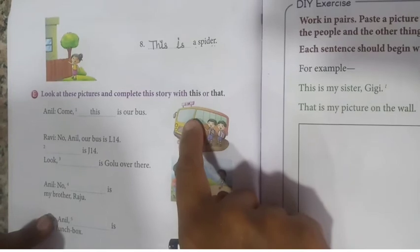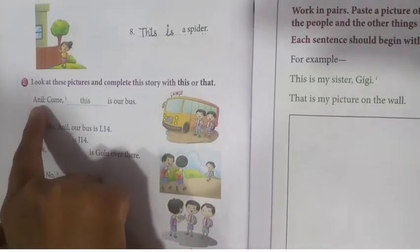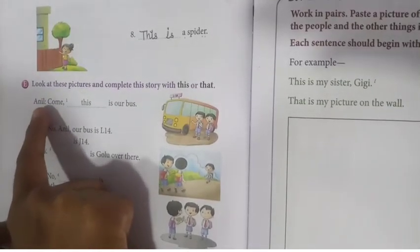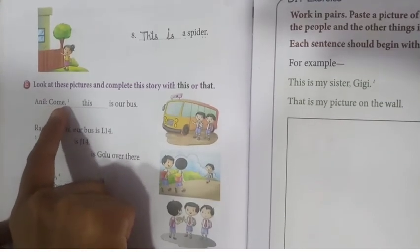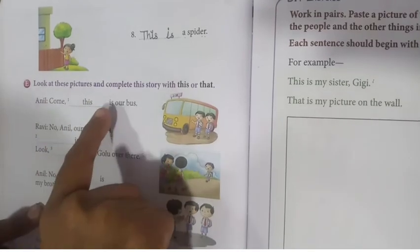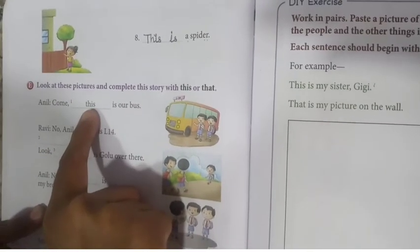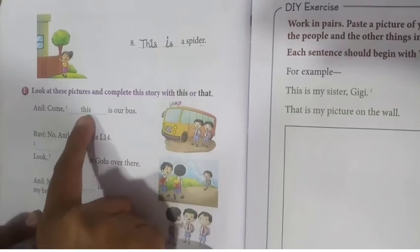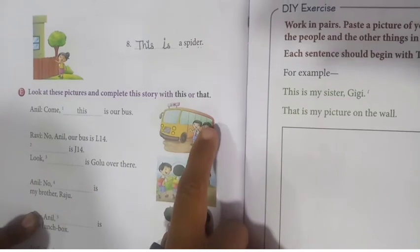Kya naam hai unka? One is Anil and another one is Ravi. So, read: Anil kya kehta hai? 'Come, dash is our bus.' Yahan par kya likha hua hai? 'This' — this matlab kaha par hai bus? Nearby. Toh yahan par kya likha hai? This is our bus. Anil kya raha hai — 'This is our bus.'